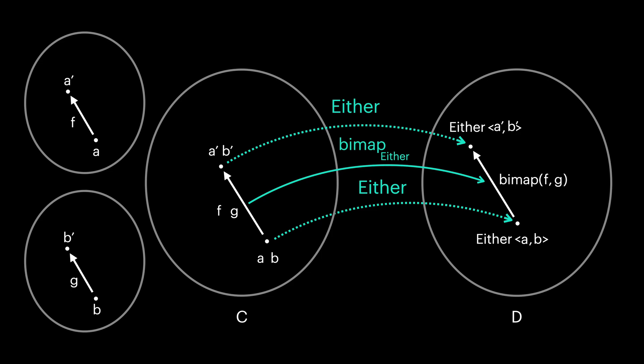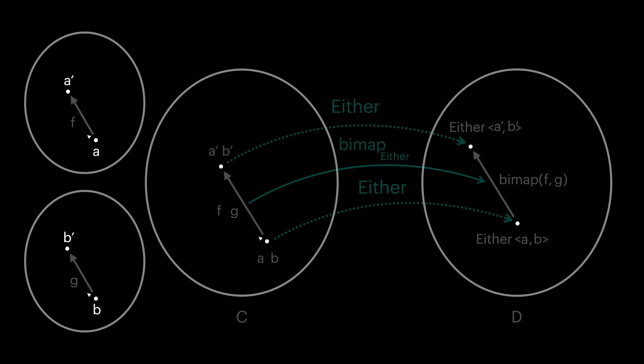As a matter of fact, if we look at bifunctor laws, they are nothing but a rewrite of functor laws for two type parameters. Let's start with identity law. Identity law states that if we apply identity first and then map the objects, it should lead to a same result as if we map the identity arrows first and then apply the mapped identities. And this is the identity law for bifunctor.